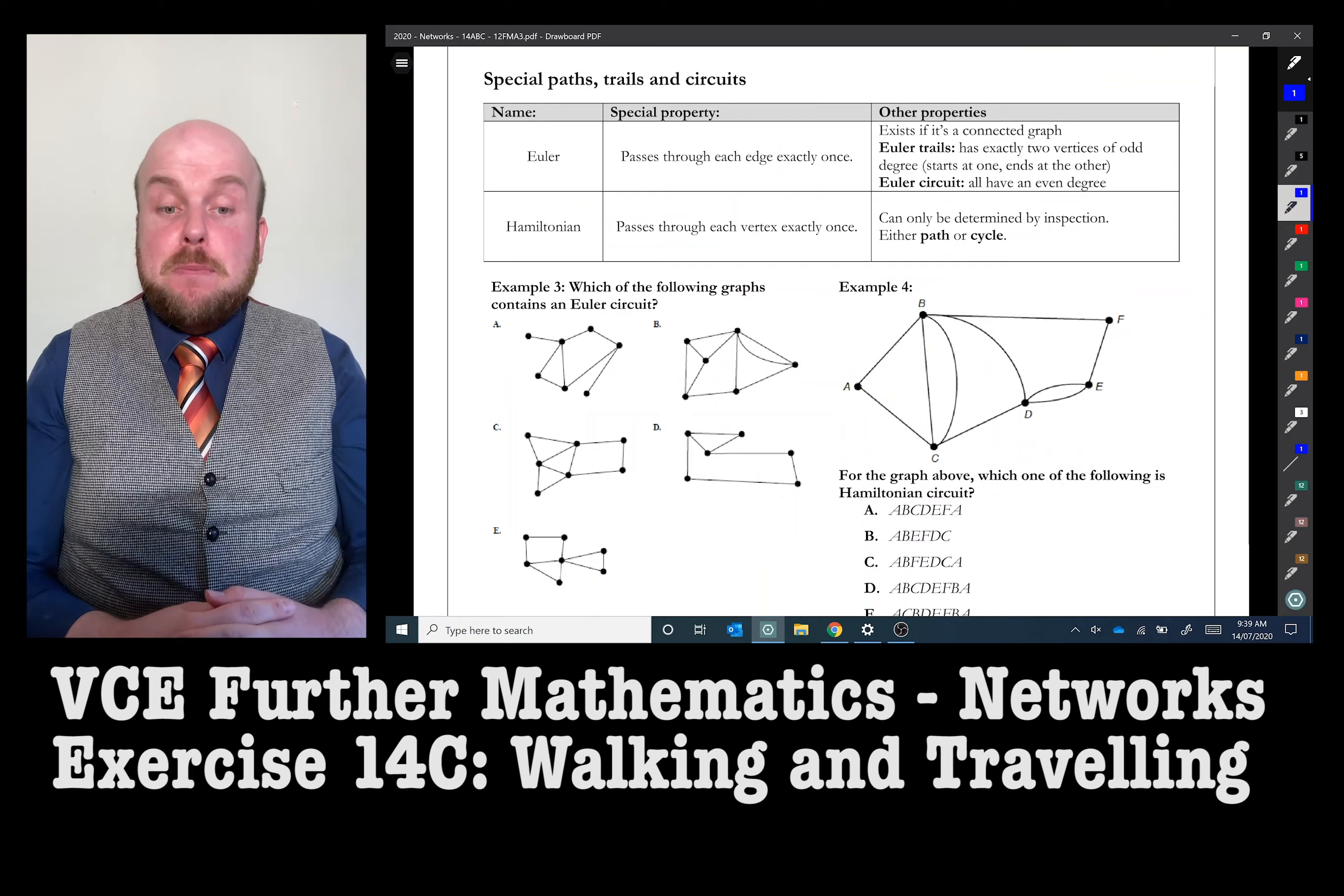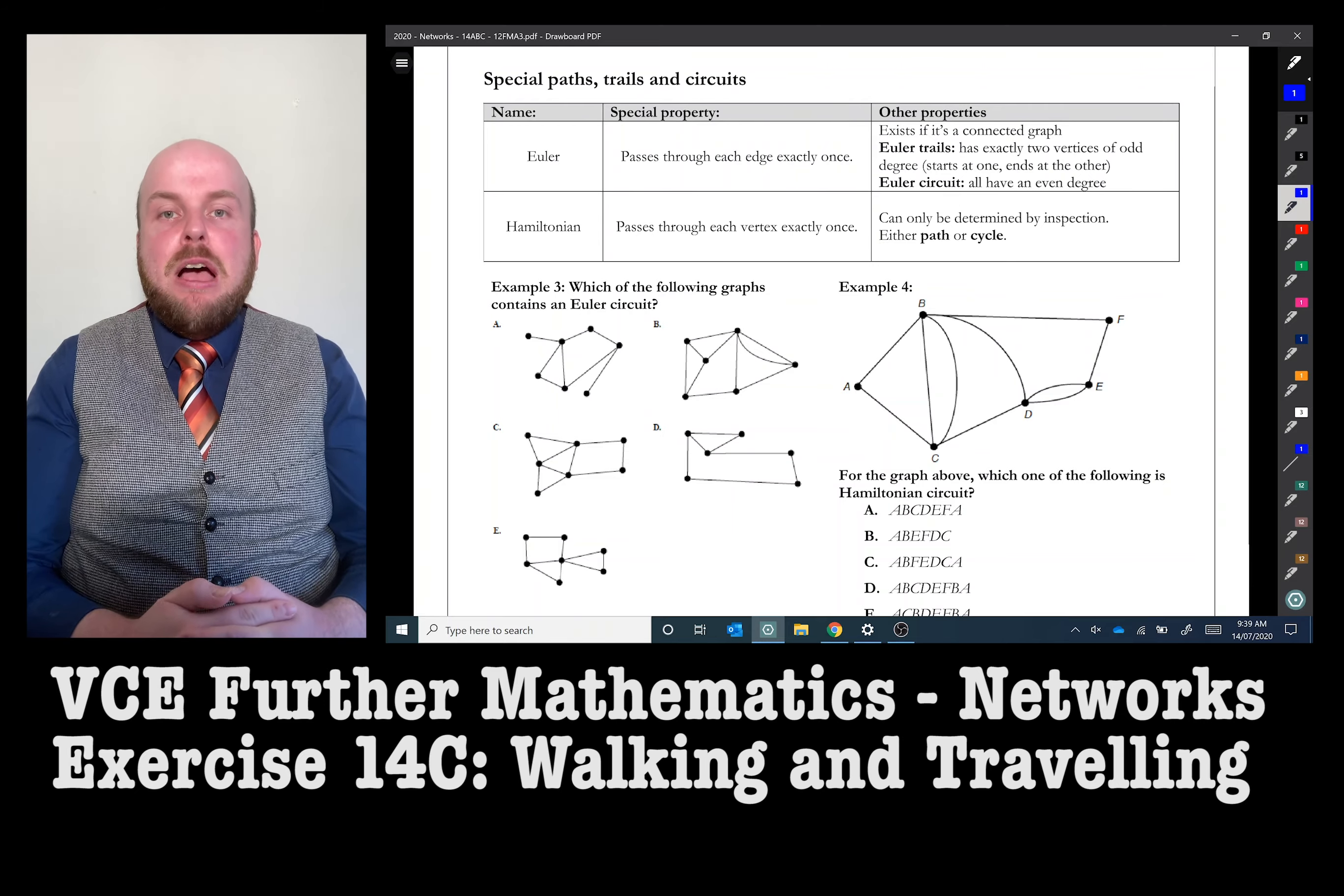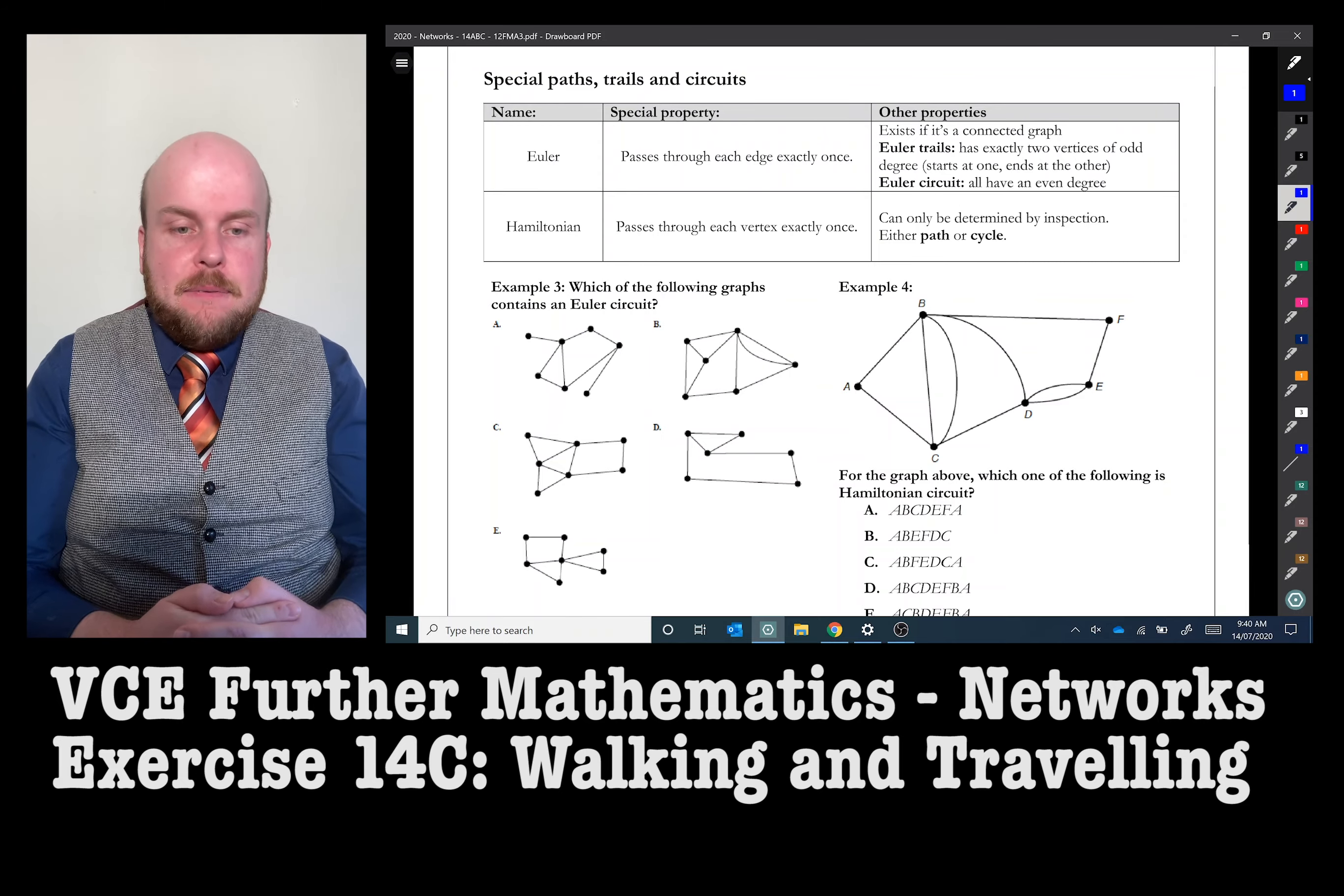Now we also have special paths, trails and circuits. There are Euler types and Hamiltonian types. Euler trails and Euler circuits pass through each edge exactly once. Hamiltonian paths and Hamiltonian cycles pass through each vertex only once. Those are the main things to remember. If you can remember the other attributes, that is also helpful.